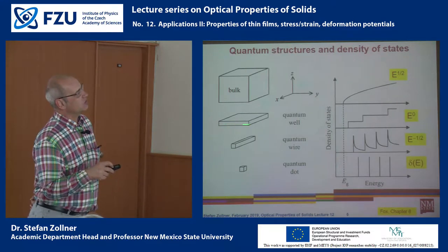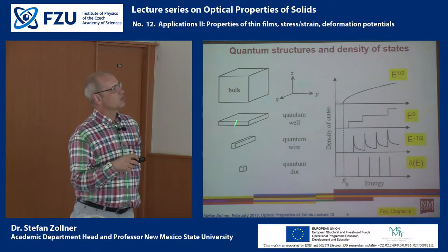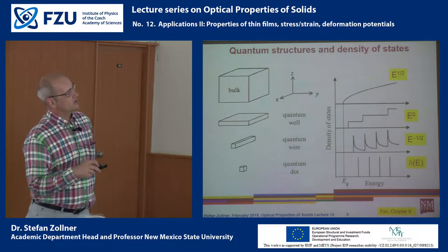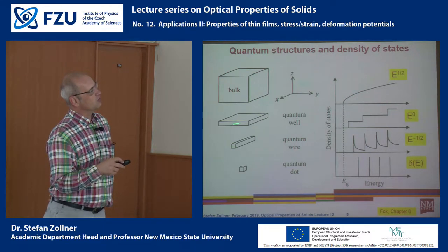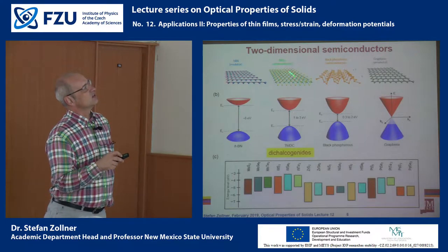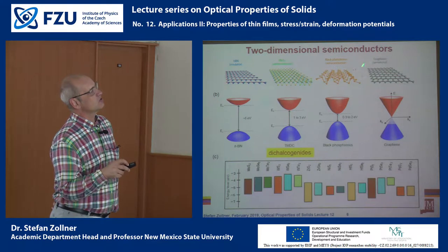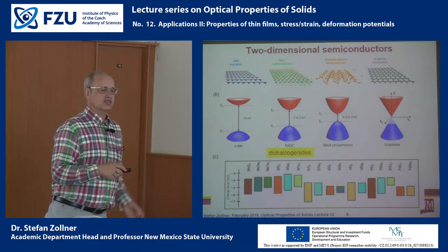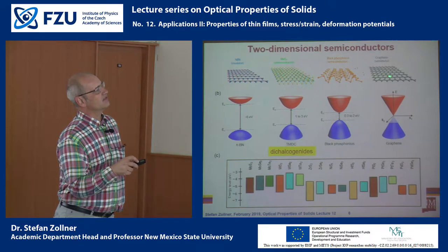A quantum well is infinite in two dimensions and has a finite width — a typical quantum well width might be about ten nanometers or 100 angstroms. We could also consider decreasing the width to the absolute limit of one atomic layer, known as two-dimensional semiconductors. The oldest and most prolific two-dimensional material people have worked on is graphene — a single layer of carbon atoms arranged in benzene rings in the plane.